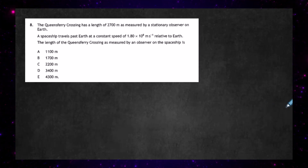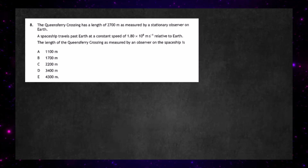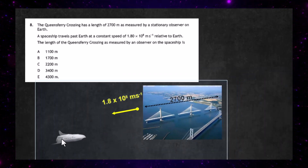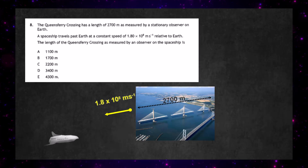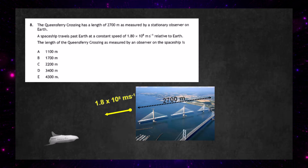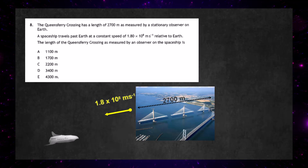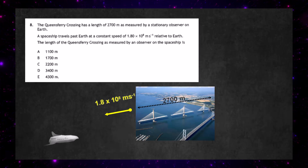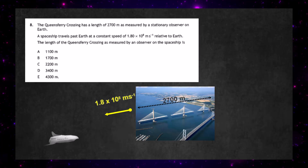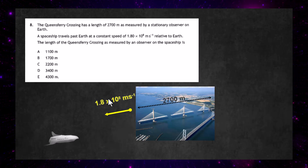Let's take a look at the picture of what's happening. We have the spacecraft flying past the earth and there's the Queensferry Crossing in all its glory — 2700 meters long — traveling at 1.8 times 10 to the power 8 meters per second. Think of the spacecraft as being at rest and the earth moving past.